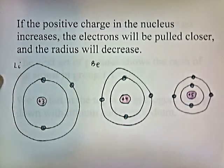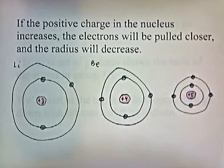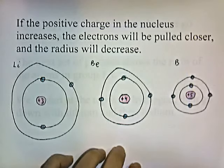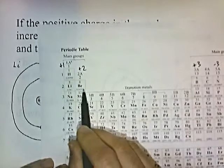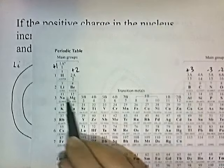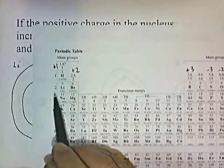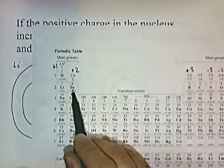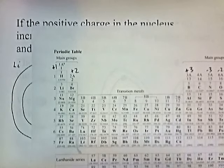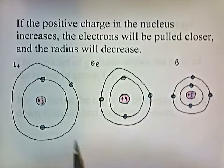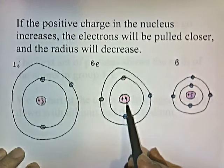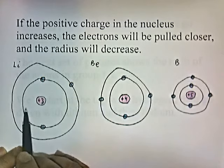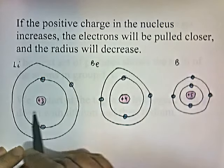Here we have a picture of lithium, beryllium, and boron. On the periodic chart, lithium, beryllium, and boron are in the second period. So we're going from left to right across the periodic chart. As we go from left to right, the number of protons in the nucleus increases — three protons in lithium, four in beryllium, and five in boron. So the amount of positive charge is increasing, and as it increases, the negative electrons are drawn closer and closer. So as you go from left to right across the periodic chart, the radius gets smaller.